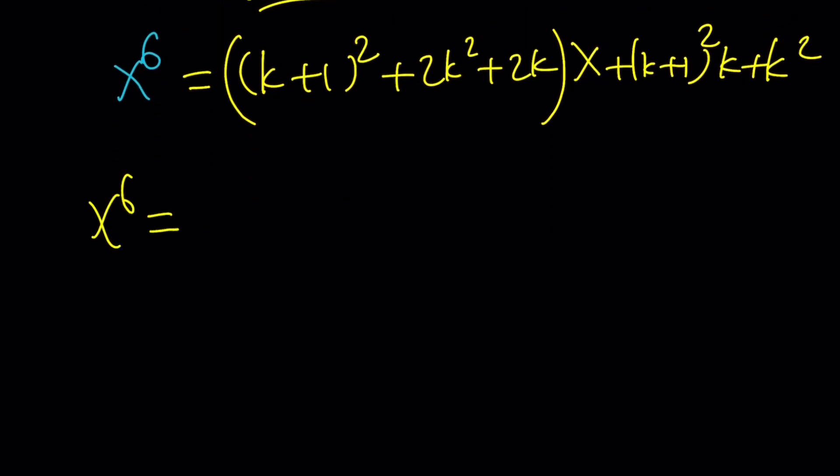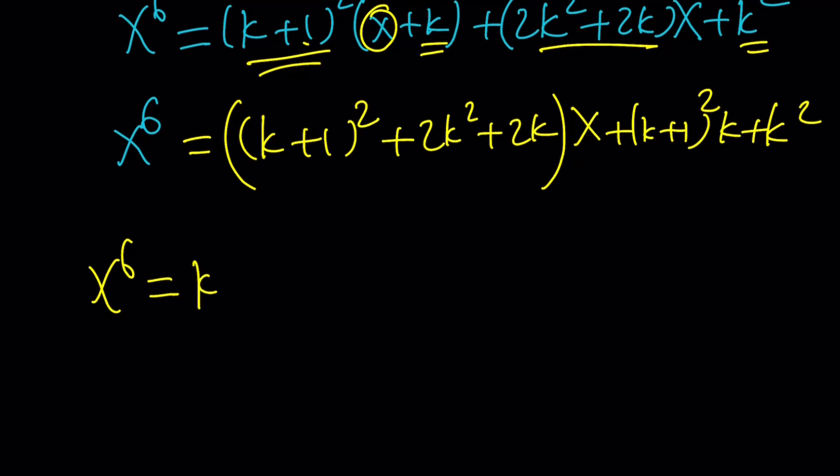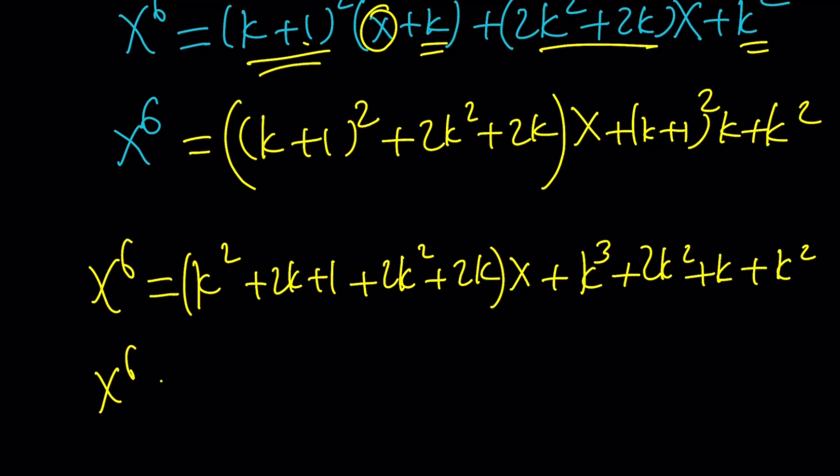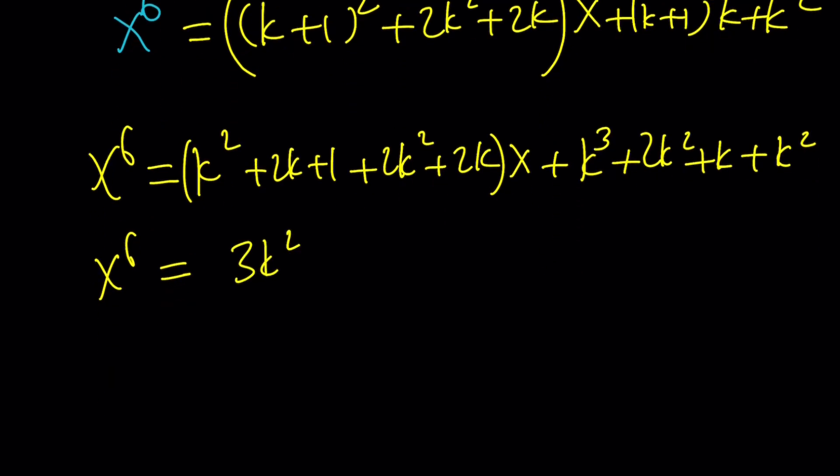Let's simplify this more. This becomes (k^2 + 2k + 1 + 2k^2 + 2k)x, and the constant term becomes k^3 + 2k^2 + k + k^2. A little more simplifying: the coefficient of x is 3k^2 + 4k + 1, and the constant term is k^3 + 3k^2 + k.